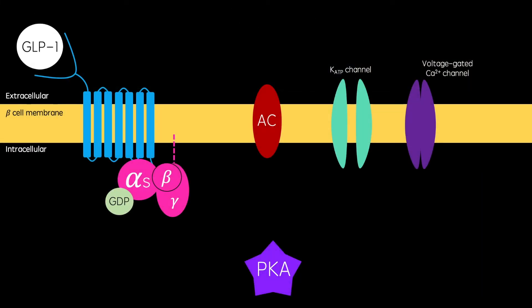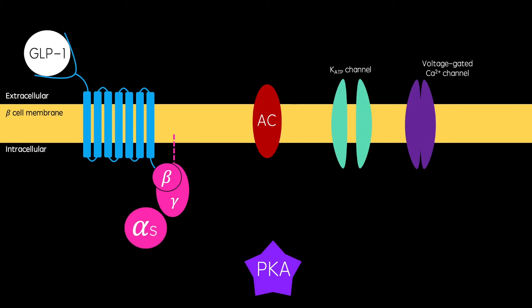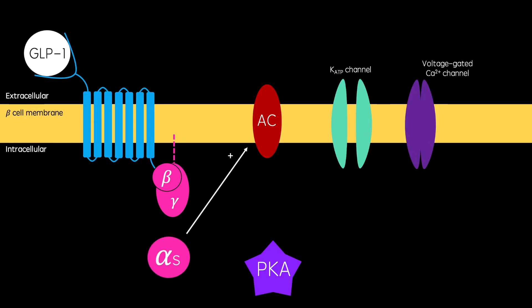As the GLP-1 receptor is Gs protein coupled, its activation mediates GDP to be exchanged for GTP. This allows the alpha subunit to dissociate and activate adenyl cyclase, which stimulates the production of cyclic AMP. Cyclic AMP then activates protein kinase A.